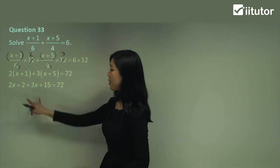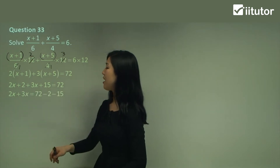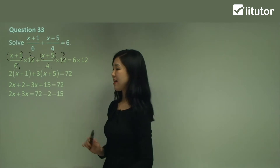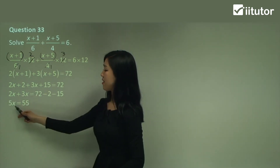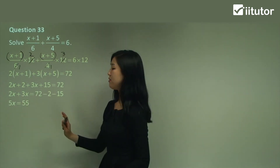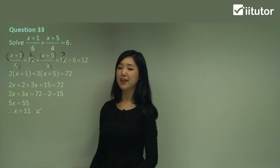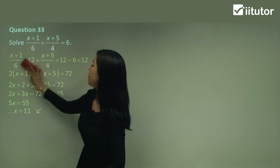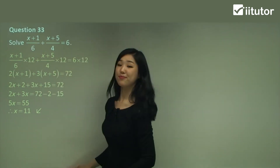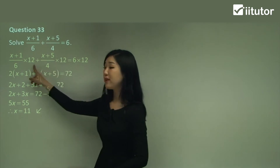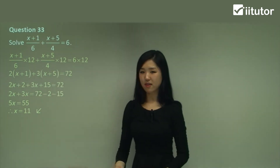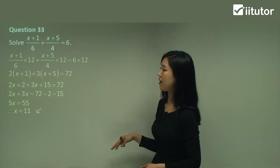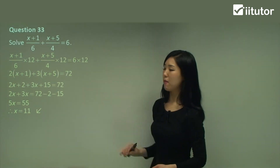Gather your like terms — keep 2x and 3x on the left and 72 minus 2 minus 15 on the right and simplify. That gives 5x equals 55, divide both sides by 5 to get x = 11. And as I said, you can multiply everything by 24 and still get the same answer, it just probably requires one extra step to simplify. But always try to look for the lowest common multiple.